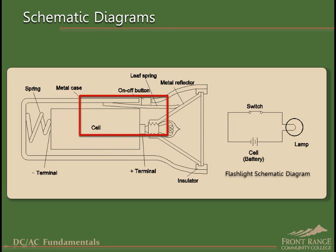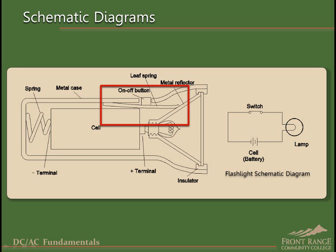Next, the control device, in this case a push-button switch, is drawn in the schematic using the generic symbol for a switch. The switch has been drawn with its contacts closed. This is the position that allows current to flow through the components and conductors that make up the circuit.